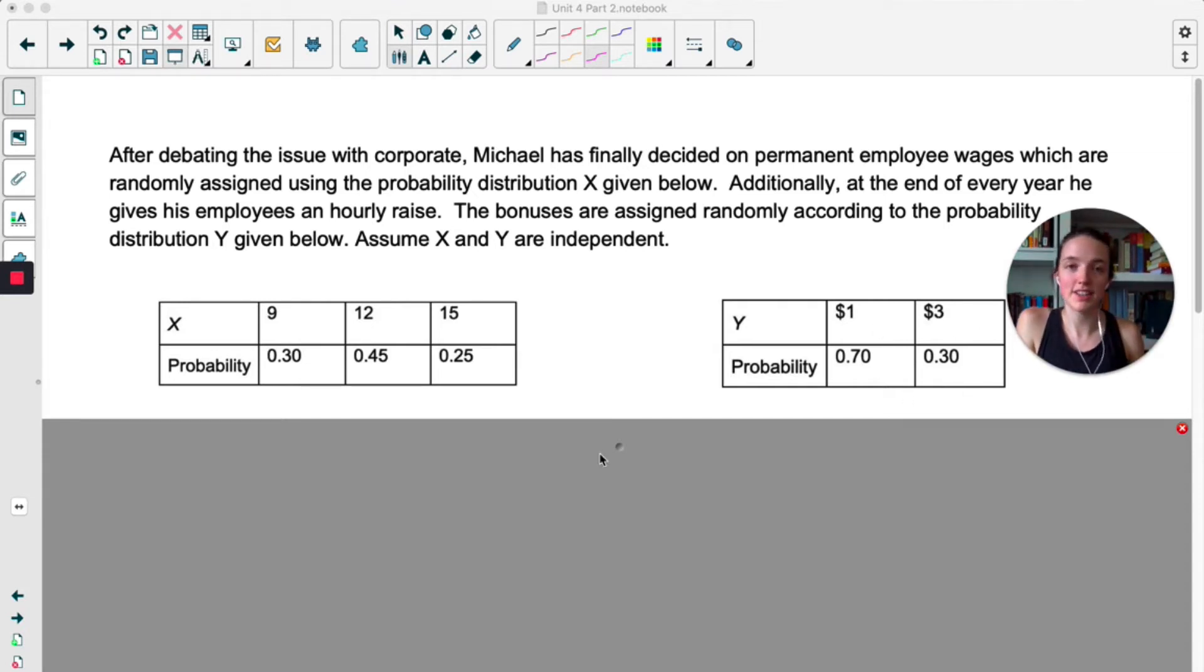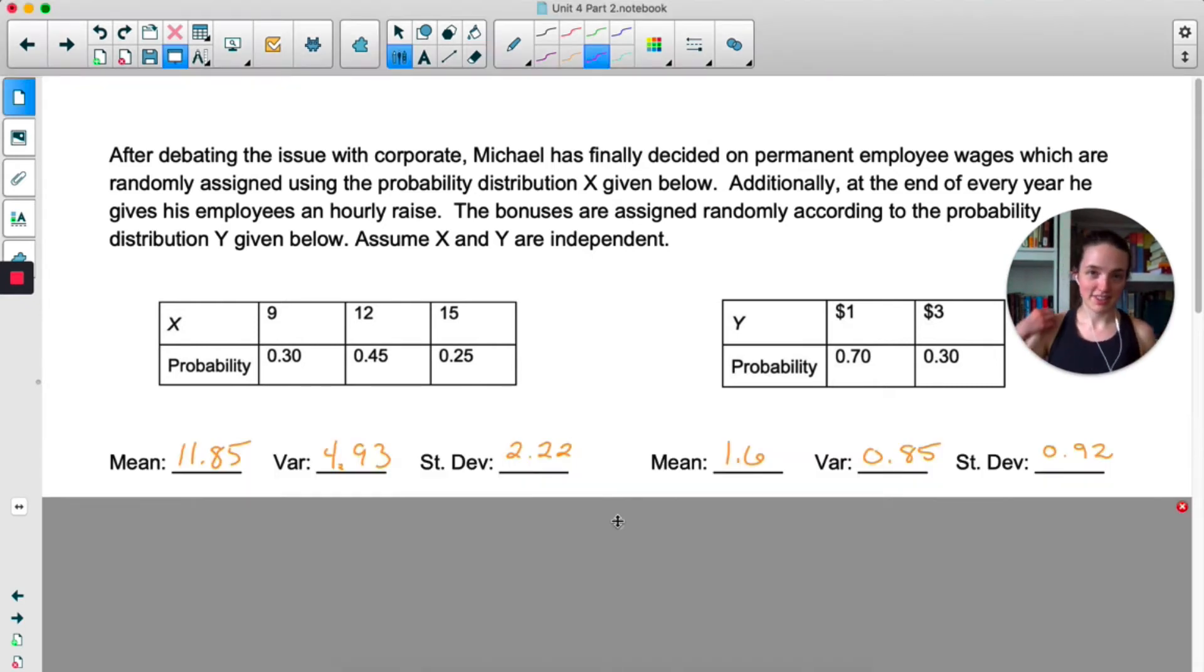We are assuming these are independent. He's using some kind of computer software that's going to assign wages to each person using these probabilities. Okay, I'm going to save you some typing. The mean, the variance, and the standard deviation for X and the mean, the variance, and the standard deviation for Y are all given to you here. If you are feeling hesitant about using the calculator you might want to just practice typing things in and using one-var stats to make sure you get these numbers, but for the sake of this video I just want you to be able to do everything. I don't need you to keep typing stuff in.